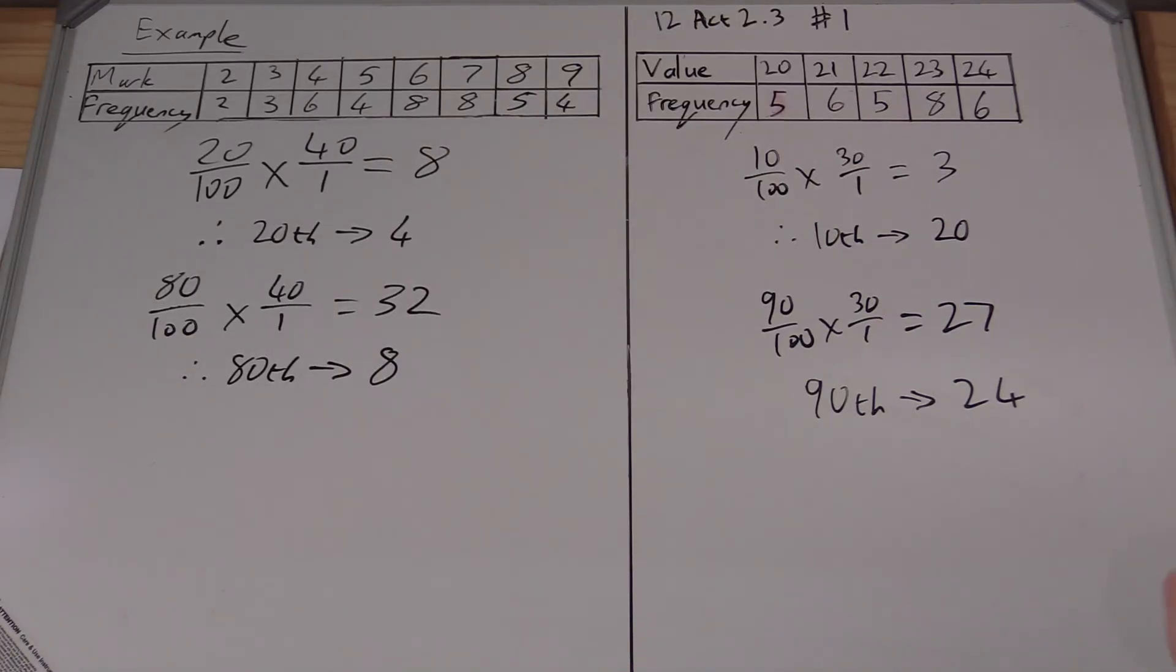Remember what this means is that 10 percent of the numbers are below this value of 20. It's not absolute because I know that third position is sitting there in the middle of that frequency, but that's the idea generally. I can also say that the top 10 percent would have got 24 or more if we're referring to these as marks. Hopefully this has cleared it up a little bit for you.